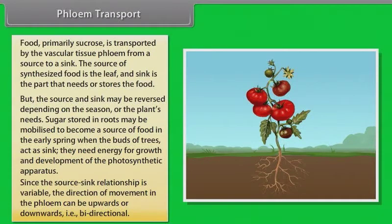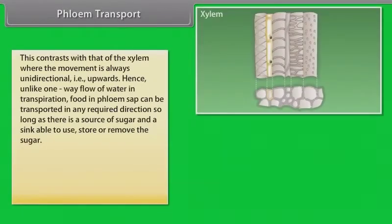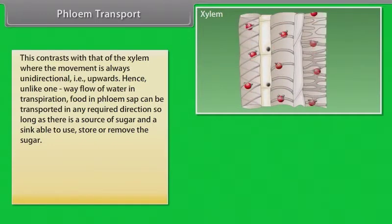This means bidirectional. This contrasts with that of the xylem where the movement is always unidirectional, which means upwards. Hence, unlike one-way flow of water in transpiration, food in phloem sap can be transported in any required direction so long as there is a source of sugar and a sink able to use, store, or remove the sugar.